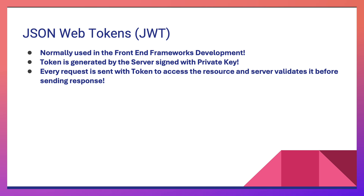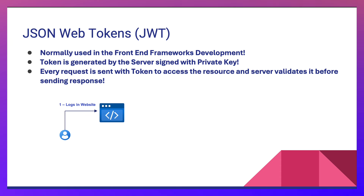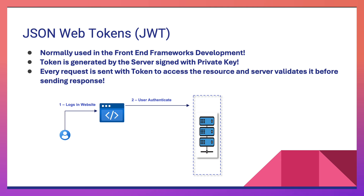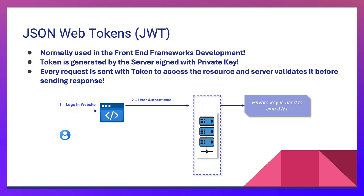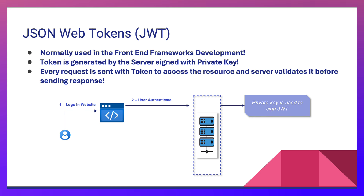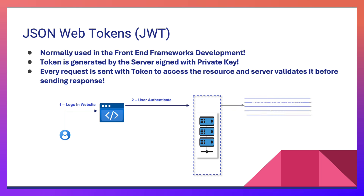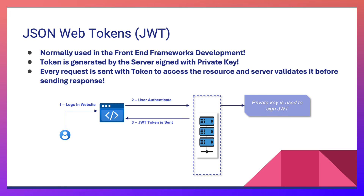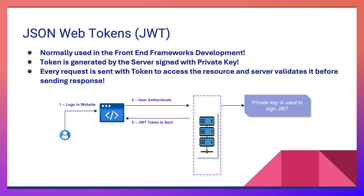In the JWT flow: a user logs in and sends authentication credentials to the backend server. This is where something changes — the backend server, or the identity access management server, uses a private key to sign the JWT token. Once created, the JWT token is sent back to the user. Typically a JWT token has an expiry time — it could be 5 or 10 minutes, depending on how the expiry is configured, which is another topic in itself.